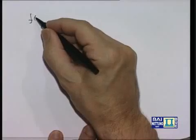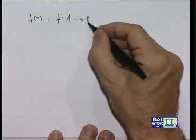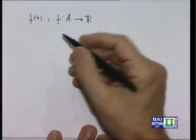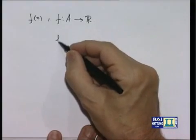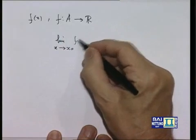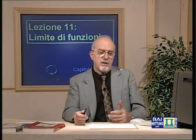Abbiamo una funzione f di x, definita su un insieme A della retta reale a valori reali, e vogliamo dare significato alla notazione: cosa vuol dire il limite per x che tende a un certo x₀ di f(x), e dire che questo limite vale L, dove L è un numero reale. Questo numero L deve rappresentare un valore di tendenza della funzione, cioè il valore a cui i valori della funzione si avvicinano quanto più x è prossimo a x₀.